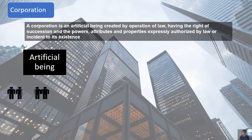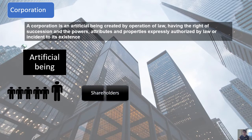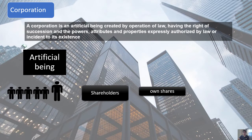As defined, a corporation is an artificial being — meaning in the eyes of the law it is considered as a person. For example, if we have five incorporators who want to form a corporation, once the corporation is formed, another person is created — this person is considered an artificial being. The incorporators are commonly known as shareholders or stockholders. They are called shareholders because they hold stock from the corporation, represented by shares — which represent their investment whether in terms of money, property, or industry.